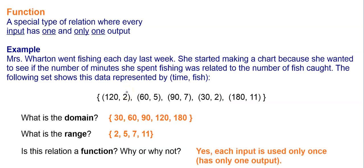Now, is this relation a function? Well, in this case, it is, because every input is used only once. It has a unique output. Notice that the range used 2 twice. It's okay for the range to repeat a number, just not the domain.